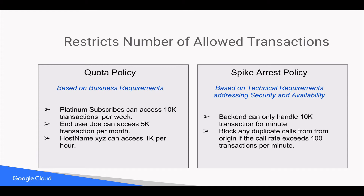These requirements could be like: my backend cannot handle any load above 10,000 transactions per minute, or to prevent a third party harvesting my data, I want to block calls from the same origin if they exceed 100 transactions per minute. The Spike Arrest policy spans over a very short interval of time, typically in minutes or seconds.